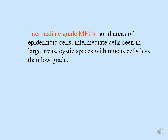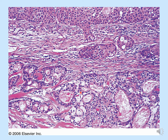Intermediate-grade mucoepidermoid carcinoma primarily shows solid areas composed of epidermoid cells, intermediate cells in large areas, and cystic spaces with fewer mucus cells than low grade. Intermediate cells appear more basaloid — darker nucleus, less cytoplasm — whereas epidermoid cells have larger eosinophilic cytoplasm and smaller nuclei. On the slide, fewer mucus cells are visible, and cells have larger, darker nuclei with less cytoplasm.